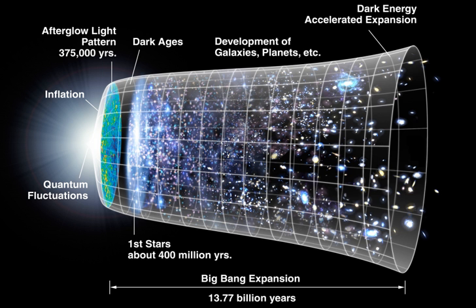Since Georges Lemaître first noted in 1927 that an expanding universe could be traced back in time to an originating single point, scientists have built on his idea of cosmic expansion. The scientific community was once divided between supporters of two different theories, the Big Bang and the steady-state theory, but a wide range of empirical evidence has strongly favored the Big Bang, which is now universally accepted. In 1929, from analysis of galactic redshifts, Edwin Hubble concluded that galaxies are drifting apart — important observational evidence consistent with the hypothesis of an expanding universe.